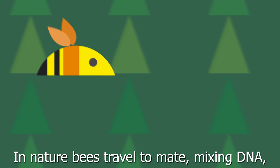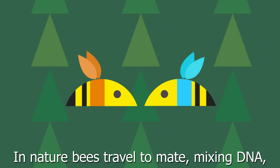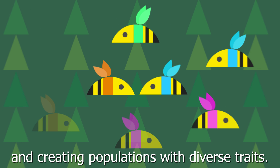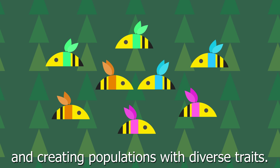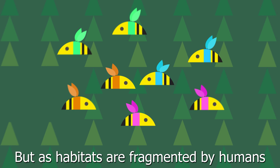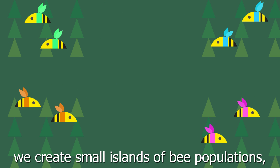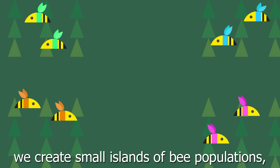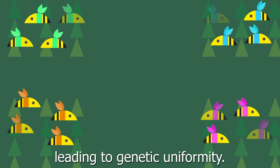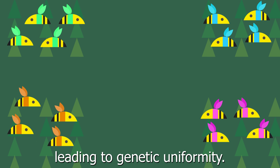In nature, bees travel to mate, mixing DNA and creating populations with diverse traits. But as habitats are fragmented by humans, we create small islands of bee populations, leading to genetic uniformity.